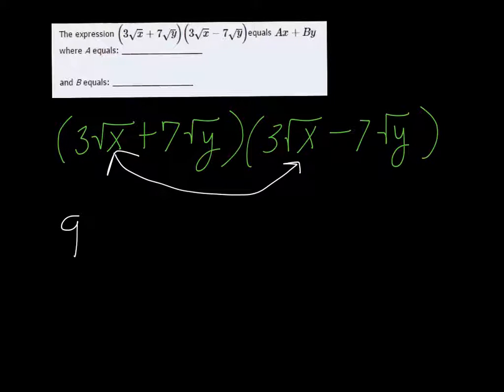Square root of x times the square root of x is just x. The outside ones are 3√x times -7√y, so that'll be -21√xy.